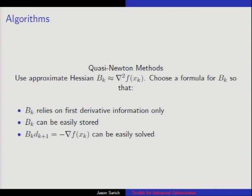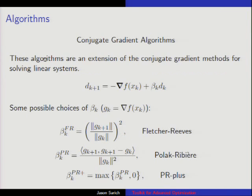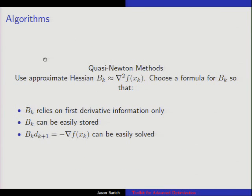For quasi-Newton methods, we just need the gradients. We can come up with a scheme for the approximate Hessian B_k so that it's easily stored — usually on the order of five gradients is good enough. We don't store the whole Hessian, and we want to come up with something so that we can solve this easily without doing a full iterative linear solve. We have methods where it's just a direct solve.